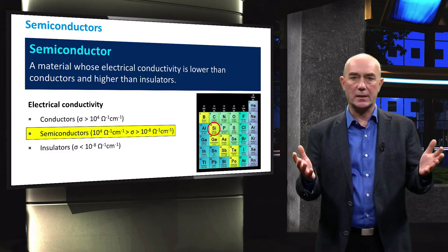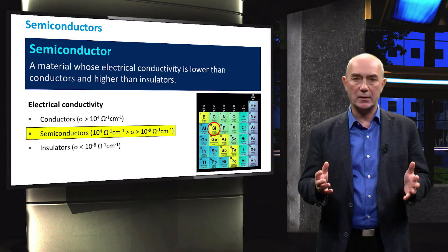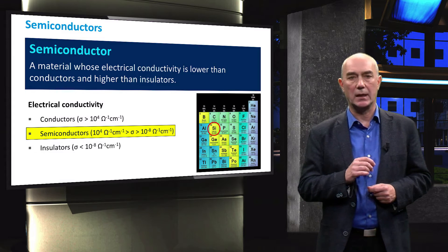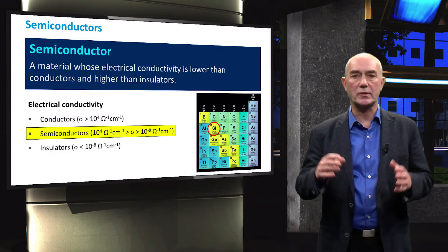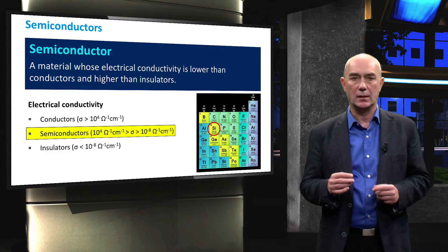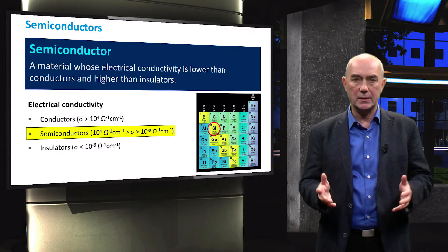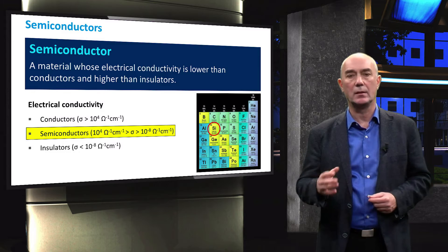One example of a semiconductor material is silicon. Solar cells made of silicon dominate the photovoltaic market. Therefore, we will focus our attention on silicon as an example of semiconductor material. We will explain its properties and use this material to describe the working principle of a solar cell.